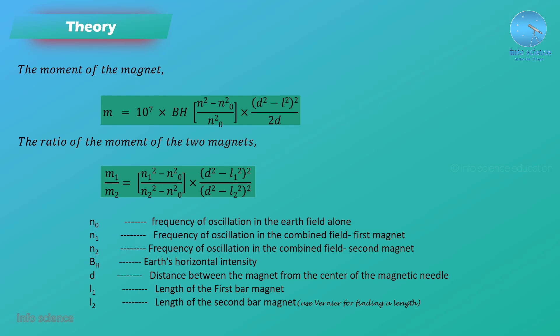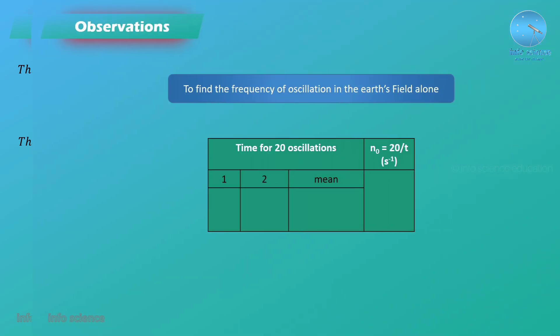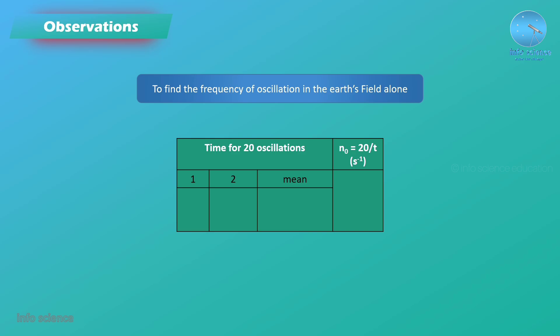Now we are moving to the observation. We are moving to the intersection of an oscillation. We are using the expected oscillation and the moment of the other side is m2 and the second magnet.